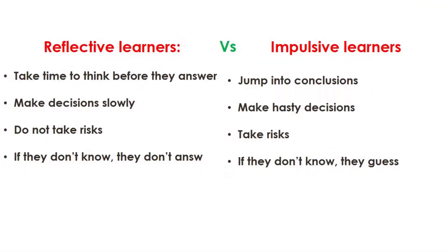The second learning style is related to reflectivity and impulsivity. It is concerned with how learners react to uncertainty — how do learners act when they are not sure about something? Reflective learners take their time to think about uncertain issues and do not make hasty decisions, while impulsive learners do the opposite: if they don't know something, they guess. They take risks and jump to conclusions without being afraid of making mistakes. Reflective learners will read a text slowly and look for details, and if they find new vocabulary words, they will need to clarify them before moving on. Impulsive learners read fast to get the general idea, and when they find new words, they simply guess their meaning and move on without using a dictionary.